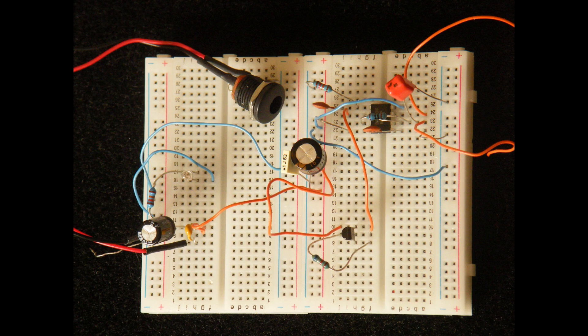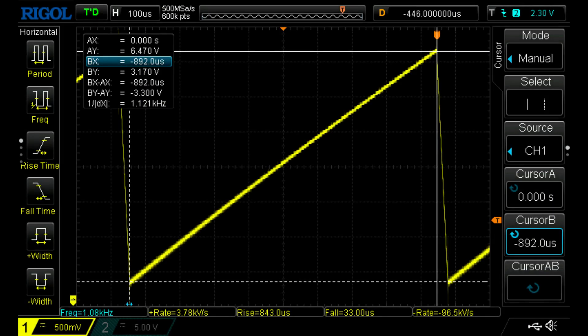And scope synchronization is taken from pin 3 of the 555. This is a scope pick taken from that output. The frequency at which the 555 is running is about 1 kilohertz.